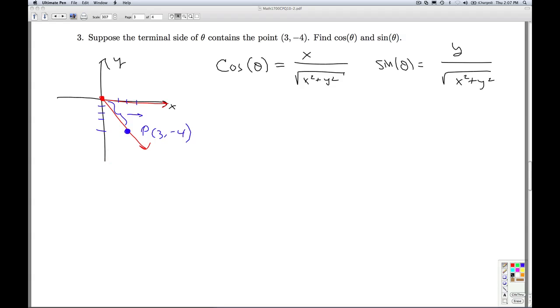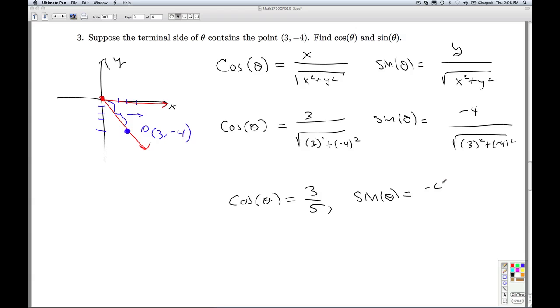So we go ahead and just run through the computations here. Cosine of theta is going to be x, which is 3, over the square root of x squared, 3 squared plus y squared, negative 4 squared. Sine of theta is going to be y, negative 4, over the same square root. So I get cosine of theta. Let's see, that's 9 plus 16, that's 25. Square root of 25 is 5, so 3 fifths. Sine of theta, negative 4 fifths. That'll do it for number 3.